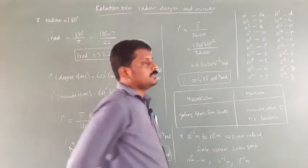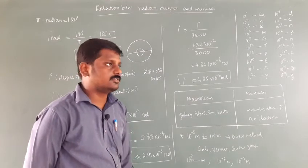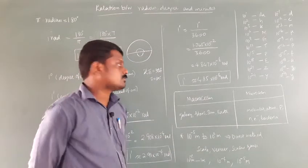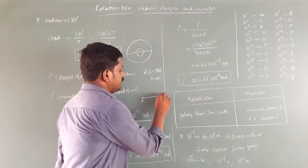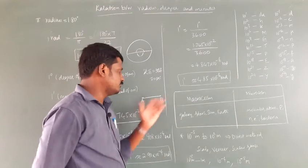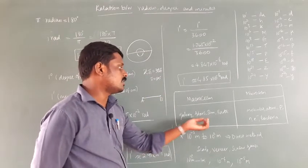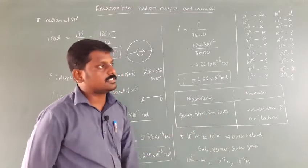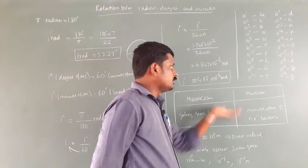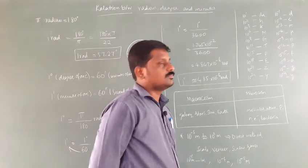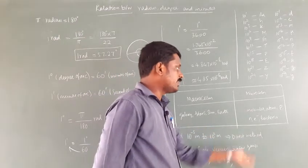Then macroscopic and microscopic world. In physics, distance is the distance between two points, such as the length from A to B. Large objects like galaxies, stars, and the sun have large distances — they are in the large world. In the microscopic world, molecules, atoms, protons, neutrons, electrons, and bacteria are small-sized.